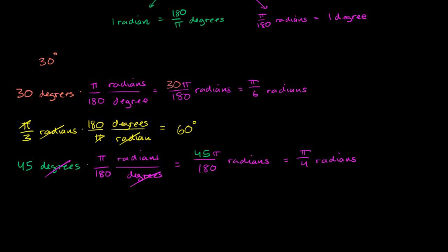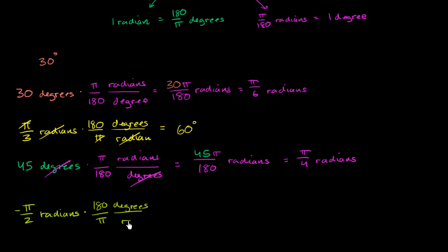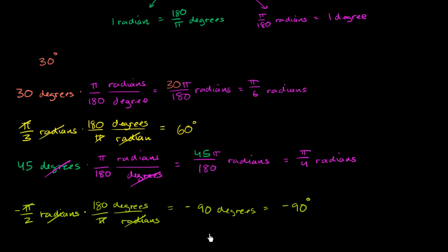Let's say that we had negative π over 2 radians. What's that going to be in degrees? We have to figure out how many degrees are each of these radians. We know that there are 180 degrees for every π radians. So the radians cancel out, the π's cancel out, and you have negative 180 over 2, which is negative 90 degrees. Hopefully you found that helpful, and I'll do a couple more example problems here, because the more examples for this the better — and hopefully it'll become a little bit intuitive.